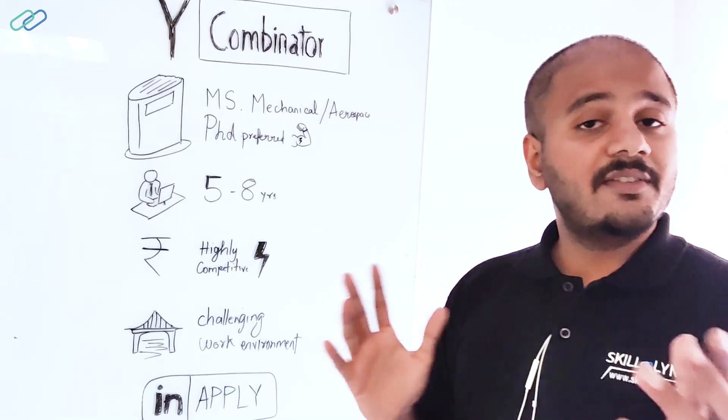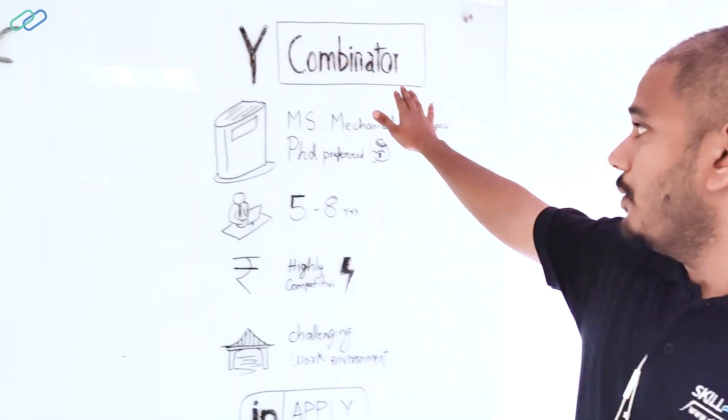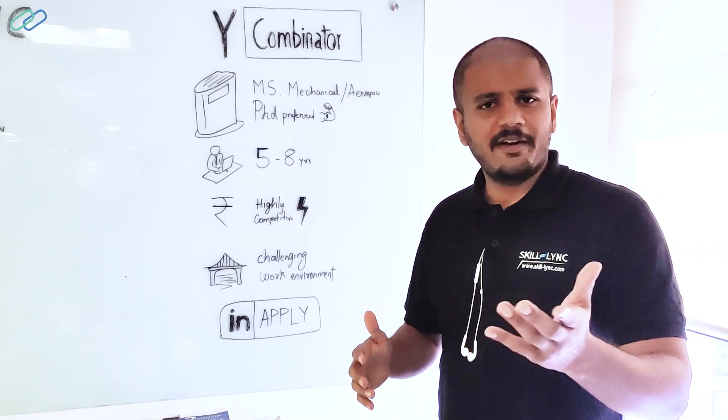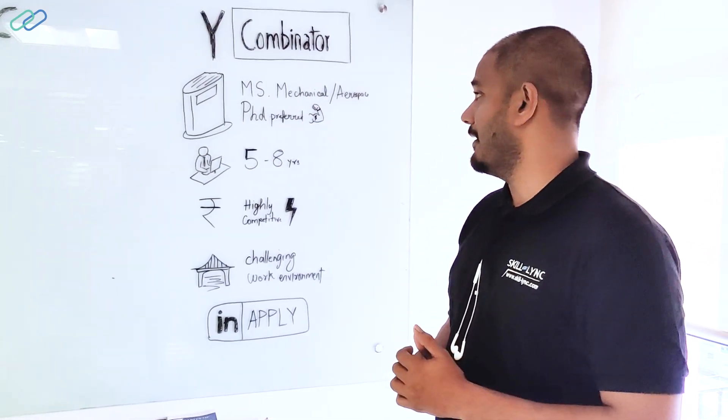As I said, Skilllink is an e-learning company and we're part of Y Combinator, which was really hard for us to get. We applied around seven times and finally got in.